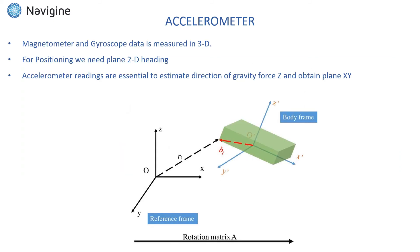However, even with the use of gyroscope and magnetometer, precise heading estimation won't be possible without accelerometer. The reason is that gyroscope and magnetometer data are essentially three-dimensional, while heading should be estimated in plane two-dimensional space. To obtain this orientation plane, we need accelerometer to estimate the direction of gravity force z, and then perform projection of magnetometer and gyroscope measurements on the plane xy, perpendicular to z.